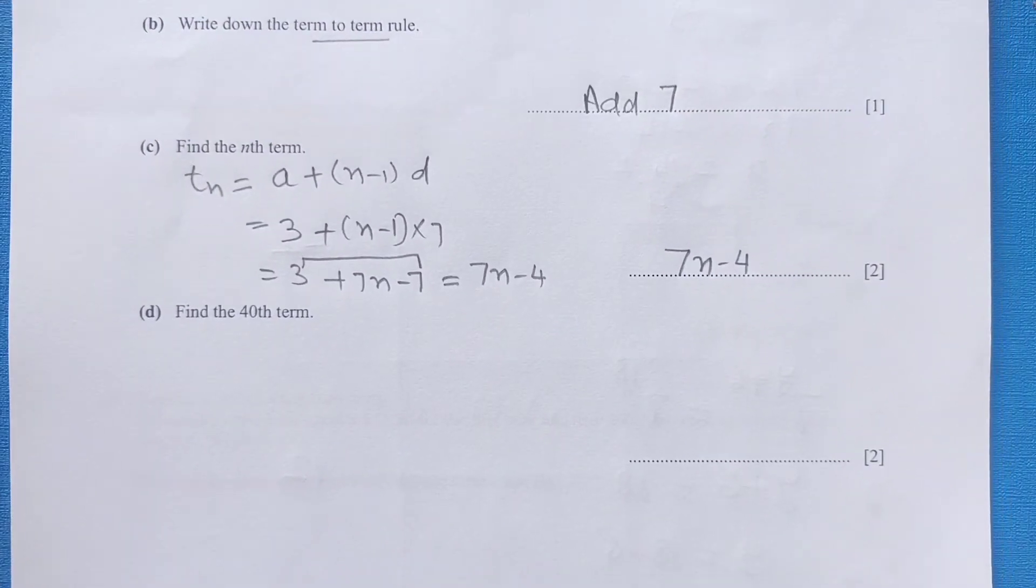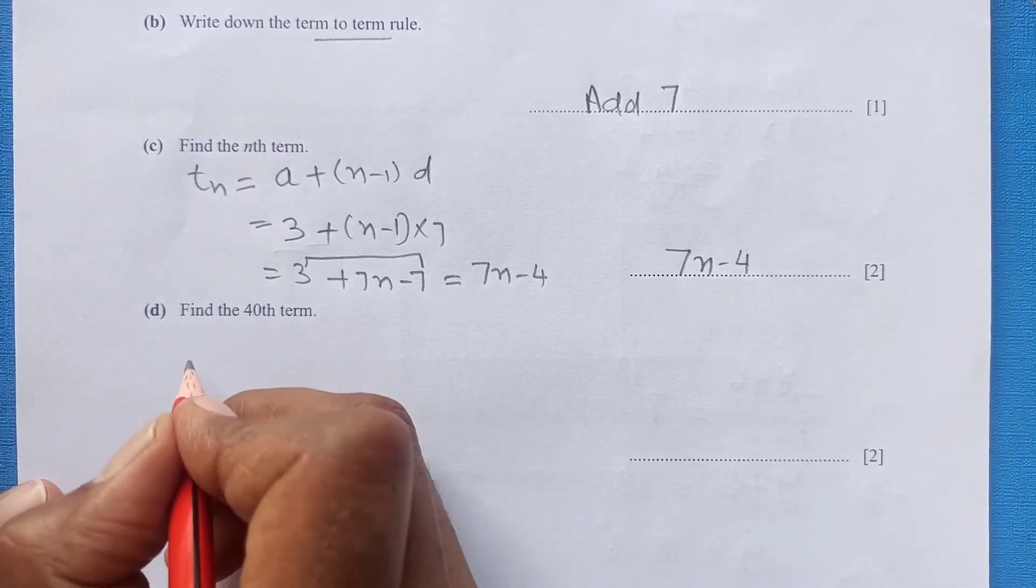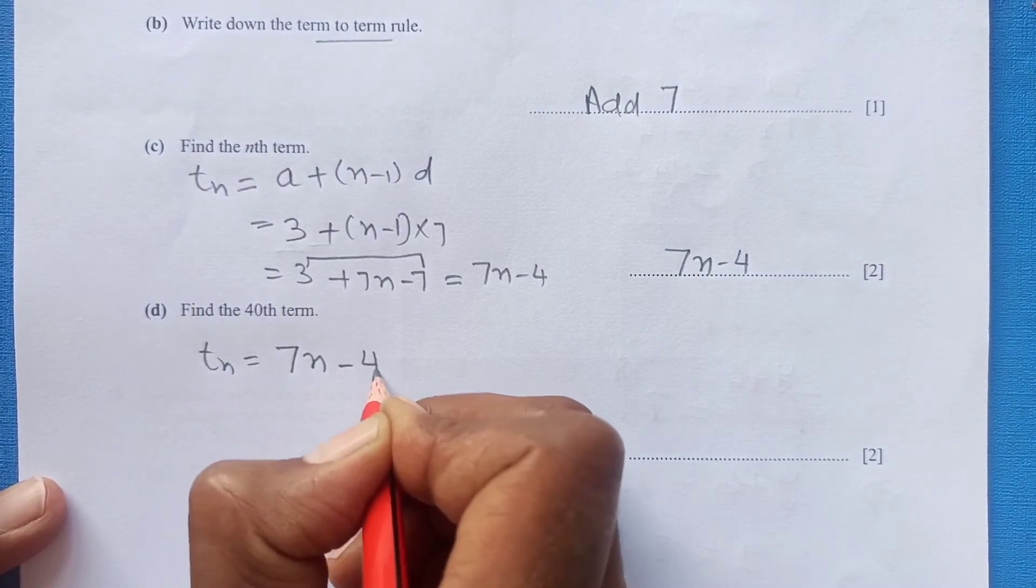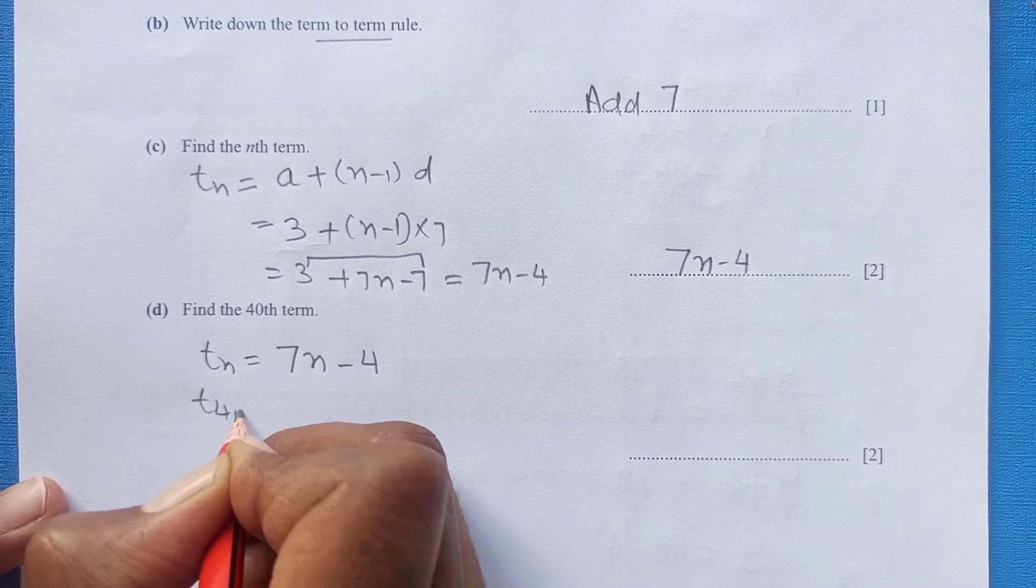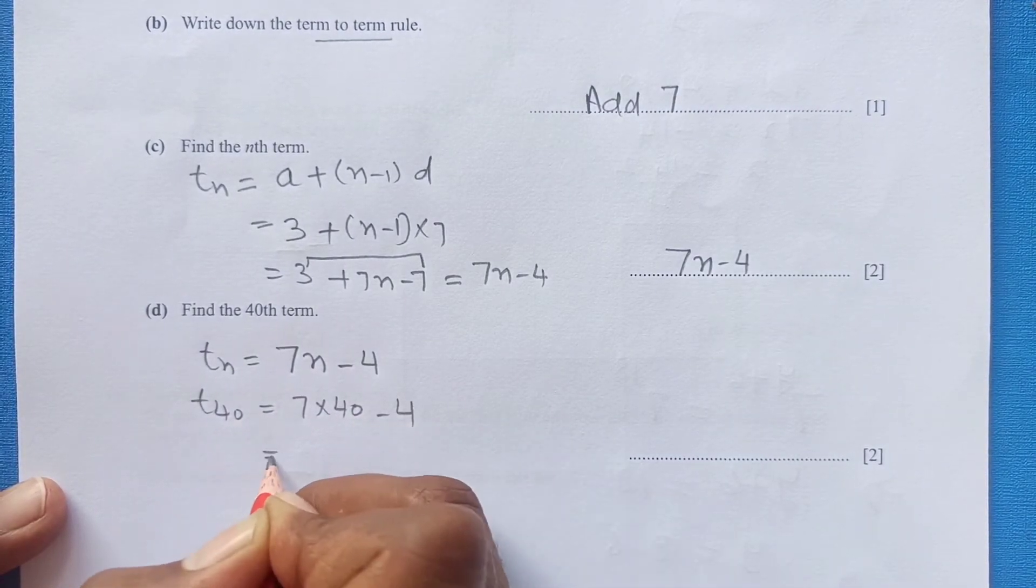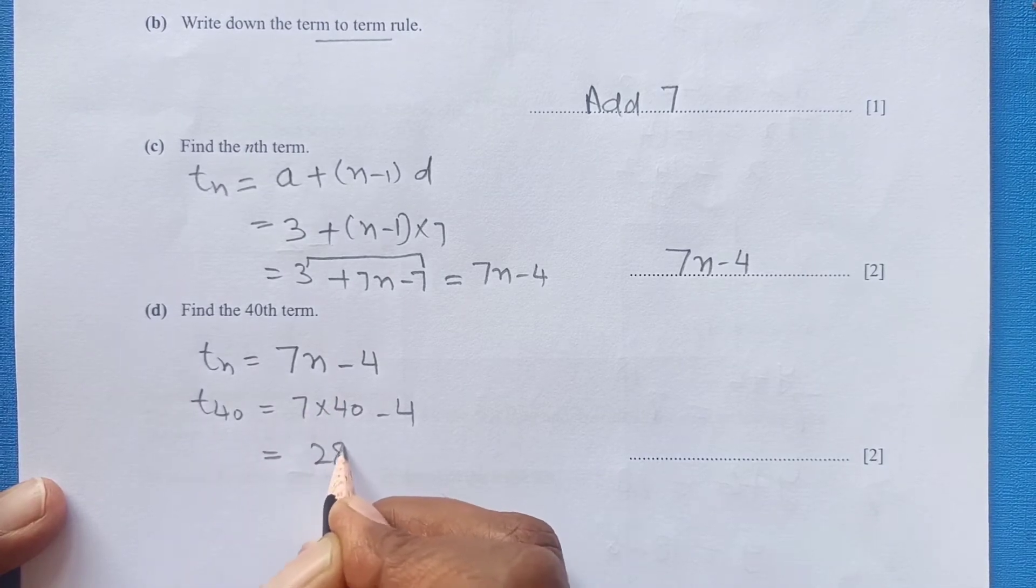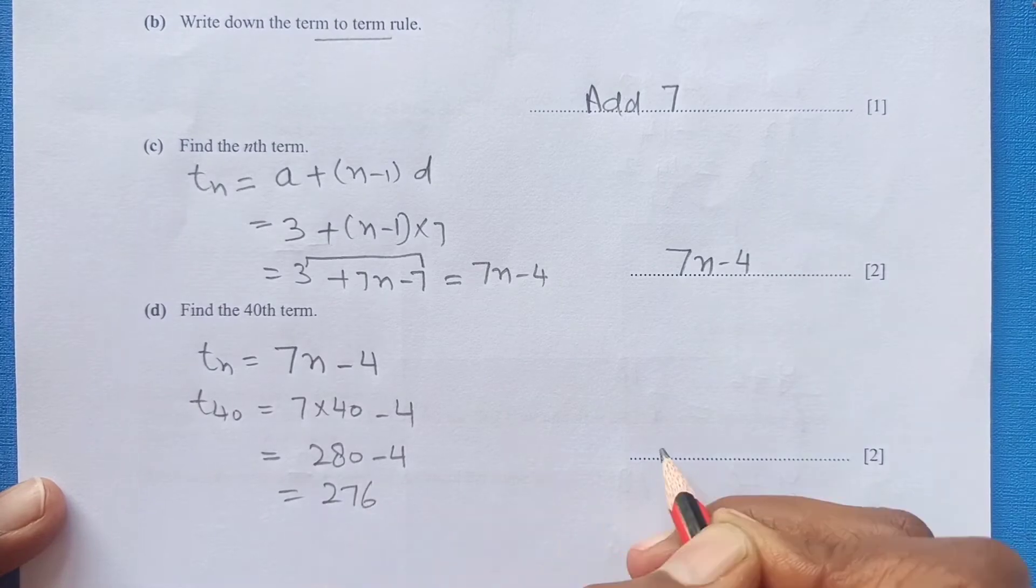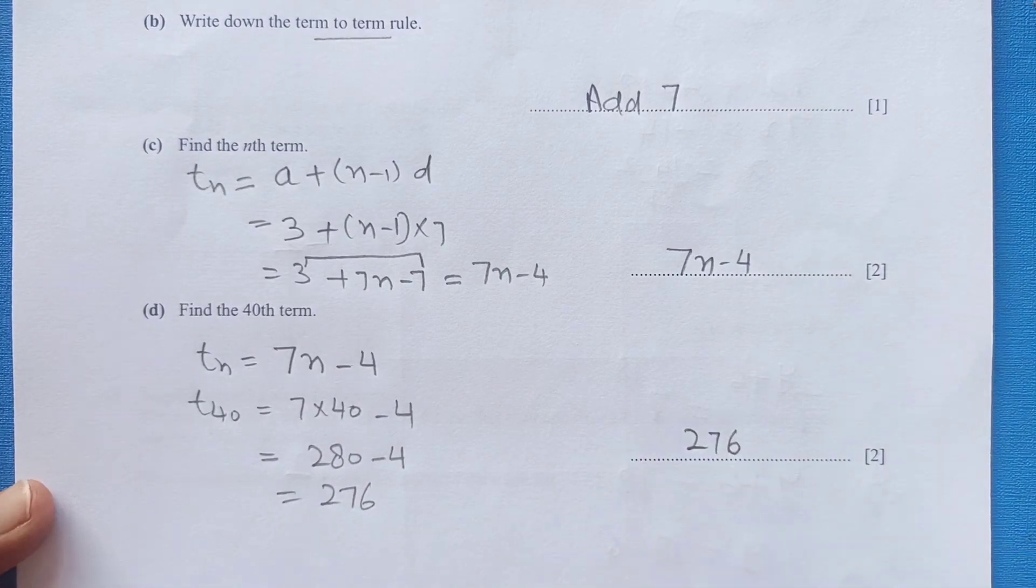So now next is find the 40th term. So now once you have the nth term you can find out any term. 7n minus 4. So t40 will be 7 times 40 minus 4. We are just going to replace n by 40. This is 280 minus 4 which is 276.